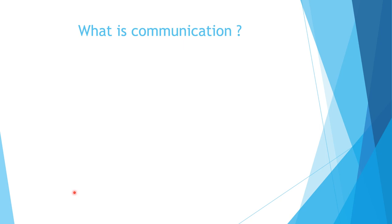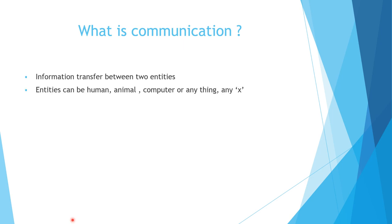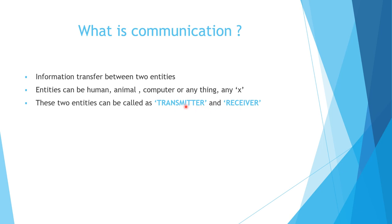What is Communication? Communication is information transferred between two entities. The entities can be two persons, two elements, two computers, or any two entities — human, animal, computer, anything. These two entities are called Transmitter and Receiver. The transmitter transmits the message from one place and the receiver receives it from the other end.